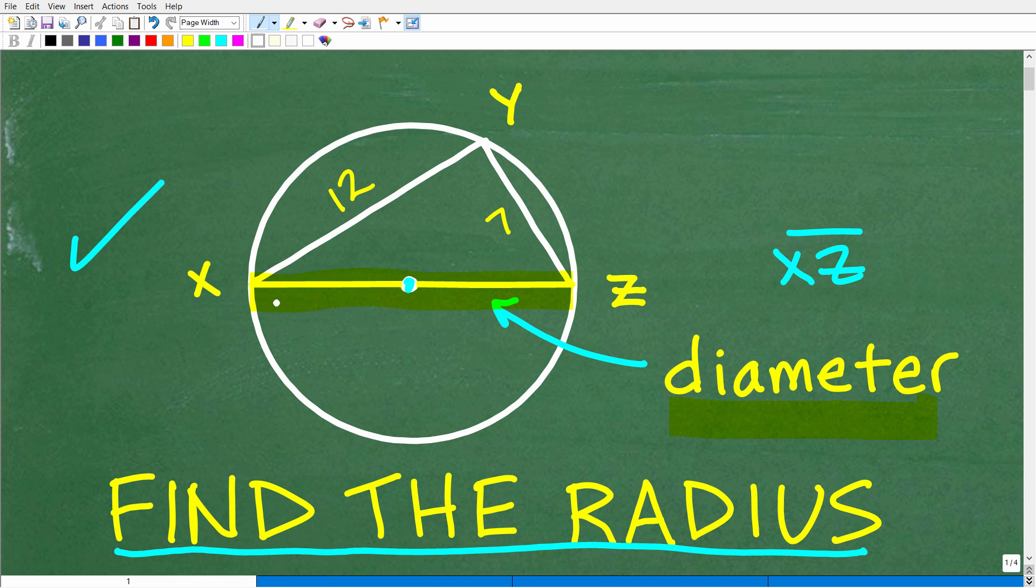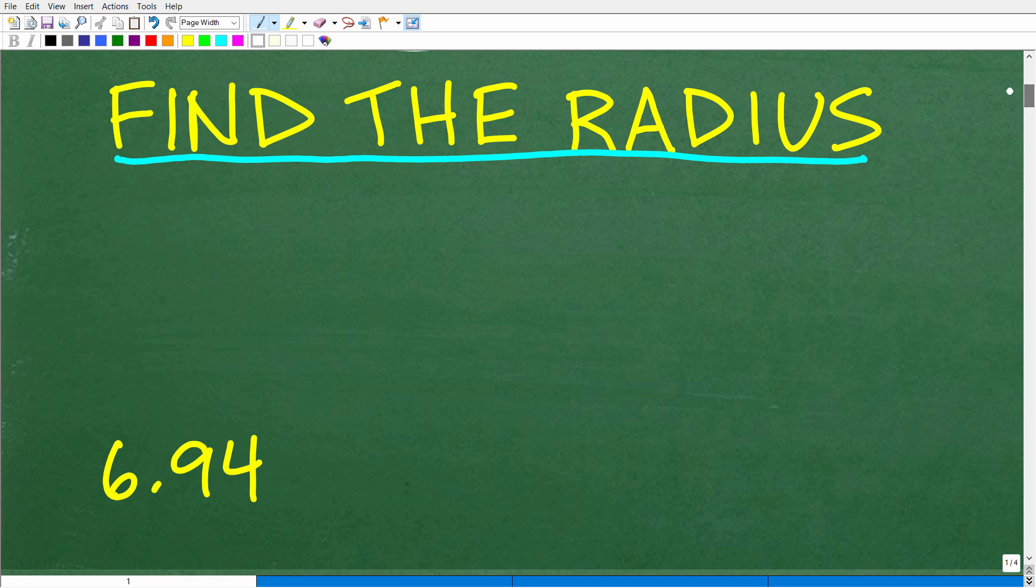Let's go ahead and first take a look at the answer. So this is the diameter of the circle. We want the radius. And what is the radius? Well, the radius is about 6.94.